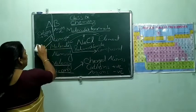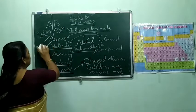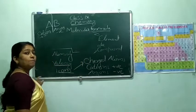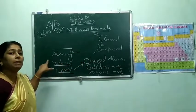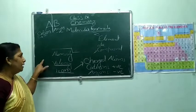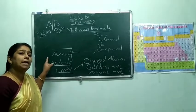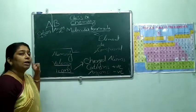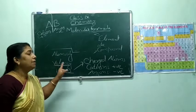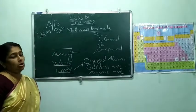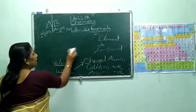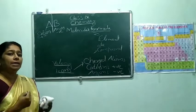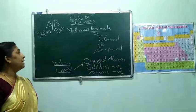We discussed atoms and molecules. Next term is atomicity. What is meant by atomicity? The total number of atoms in a molecule is called atomicity. So we have: monoatomic, diatomic, triatomic, polyatomic, etc.